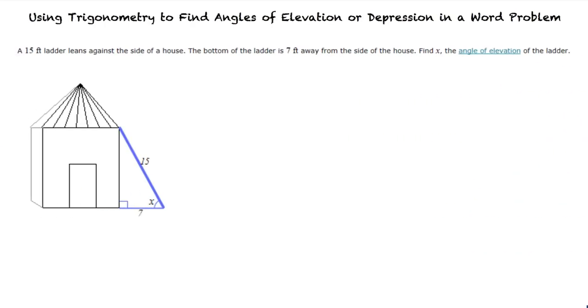A 15-foot ladder leans against the side of a house. The bottom of the ladder is 7 feet away from the side of the house. Find x, which is the angle of elevation of the ladder.